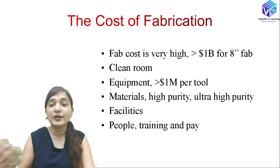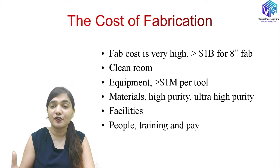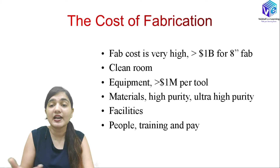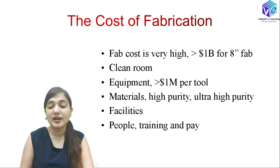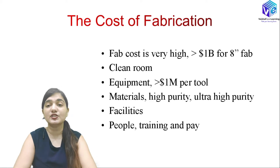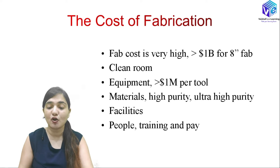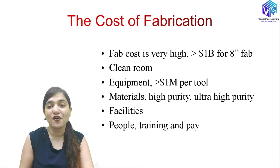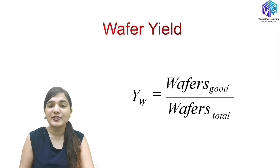Impurities must also be controlled. If I'm talking about boron or phosphorus, they should be of very high purity. Other elements like oxygen should not be present in the boron atoms, as that will cause discrepancies in the electronic properties of the VLSI device or IC. Various facilities also add to the large cost, along with trained personnel, their continuous training, and their salaries — all of these add to the cost of fabricating our chips.